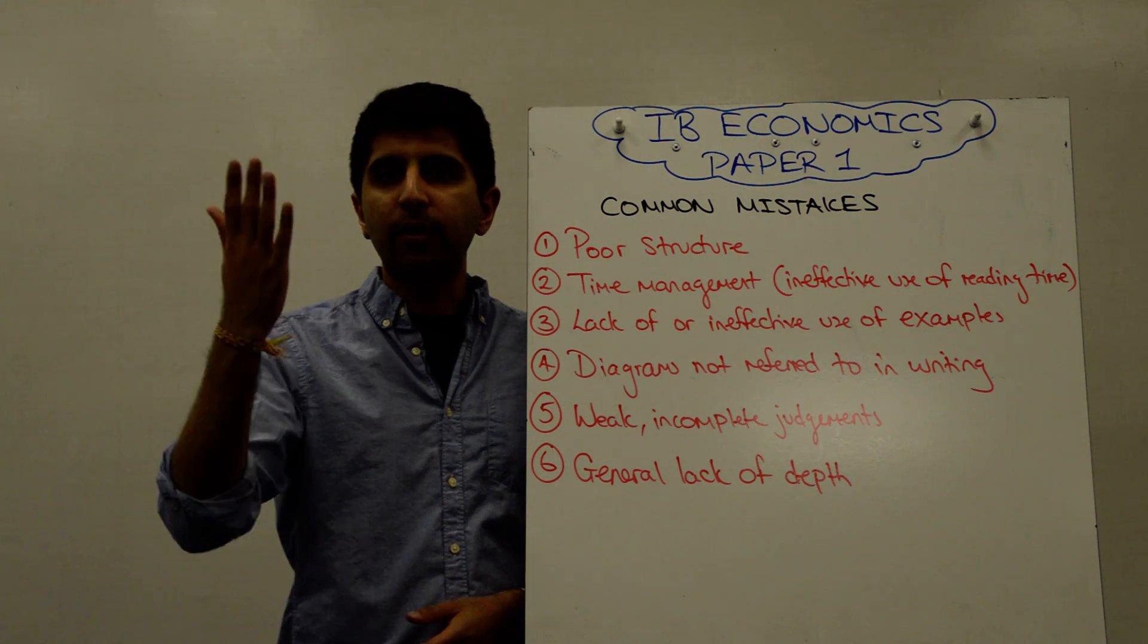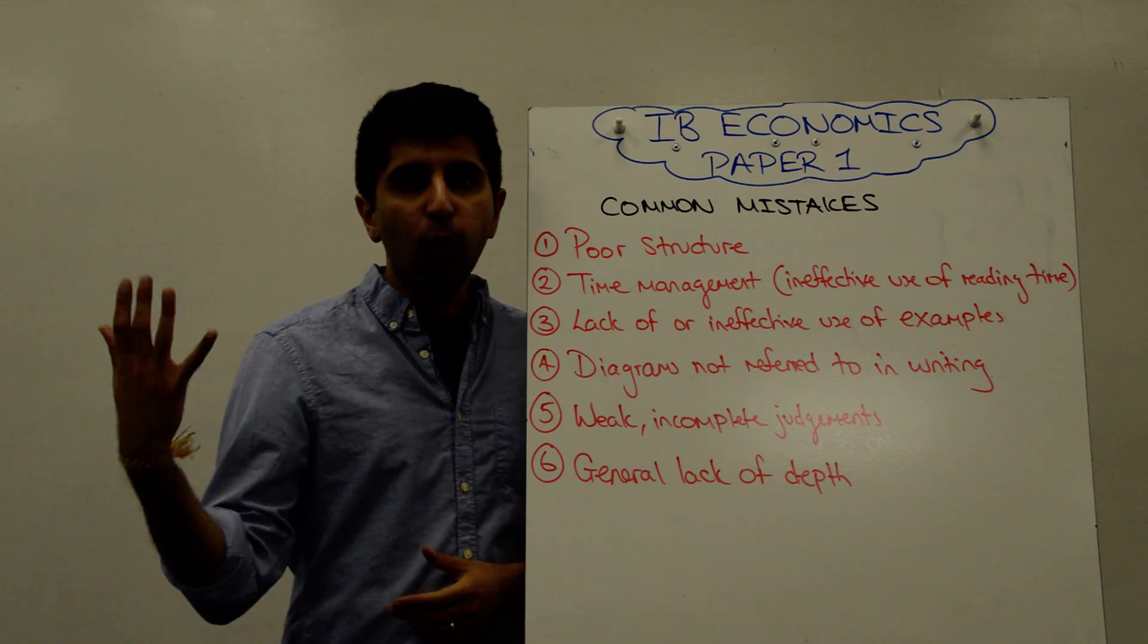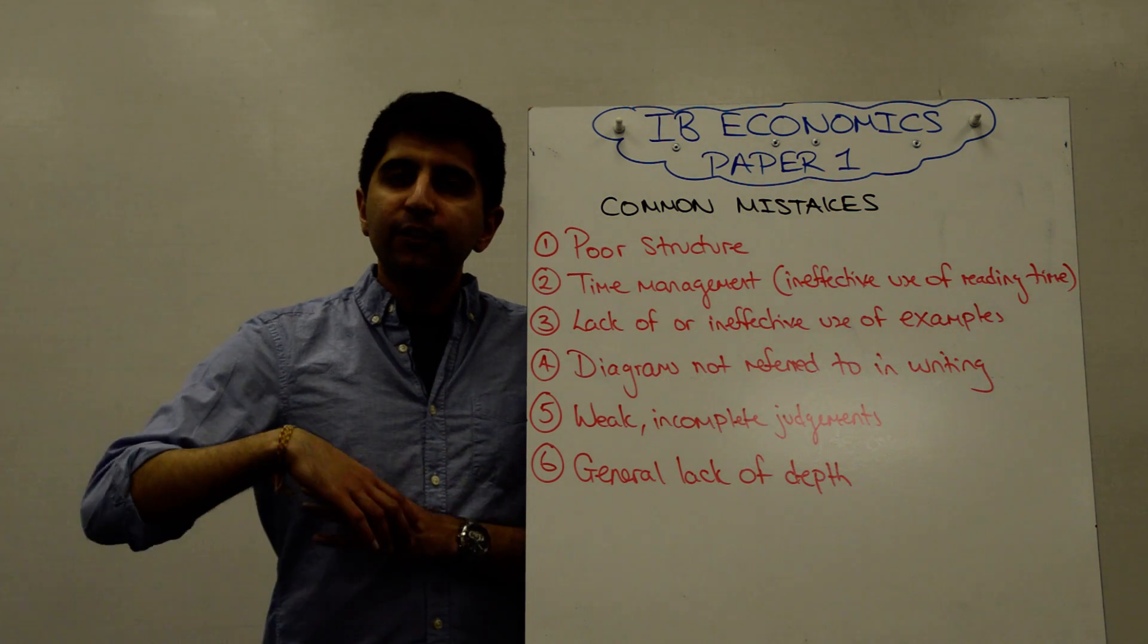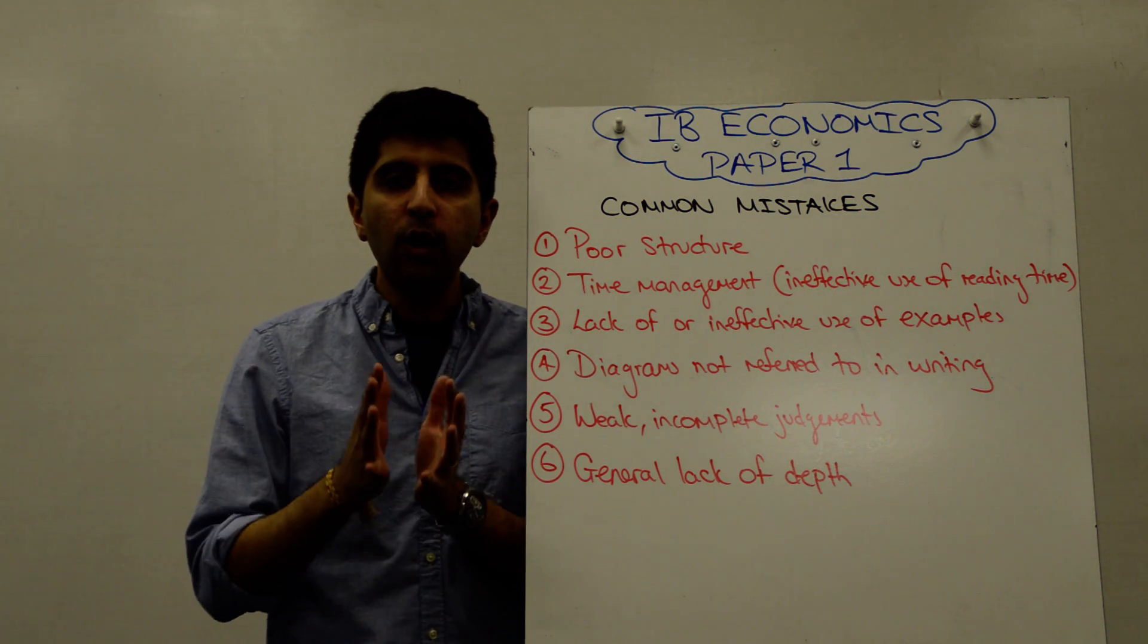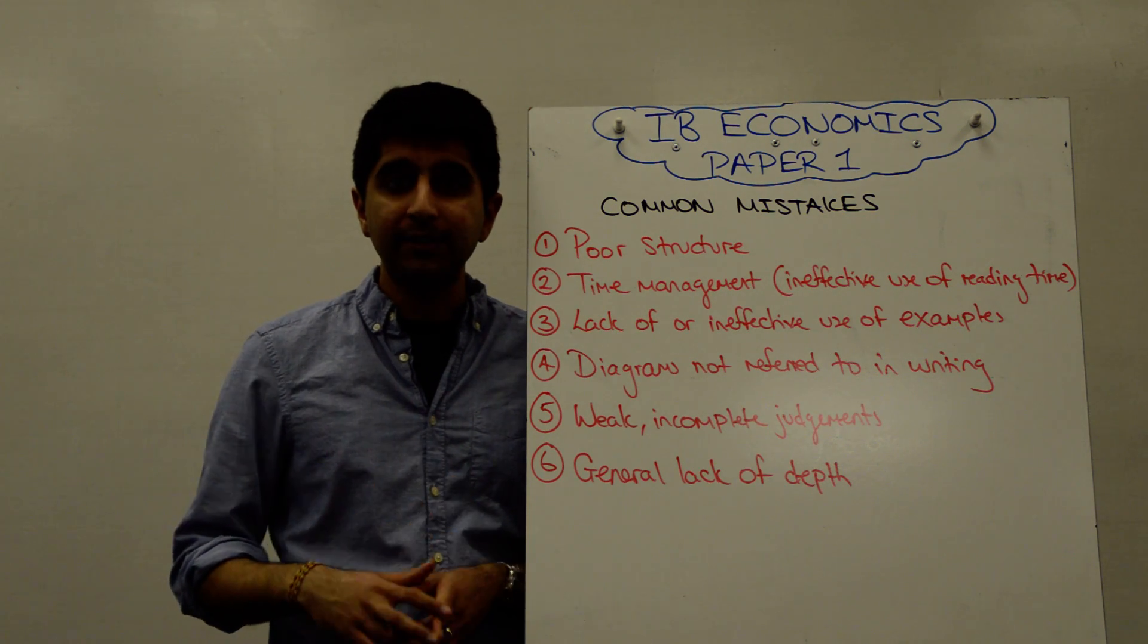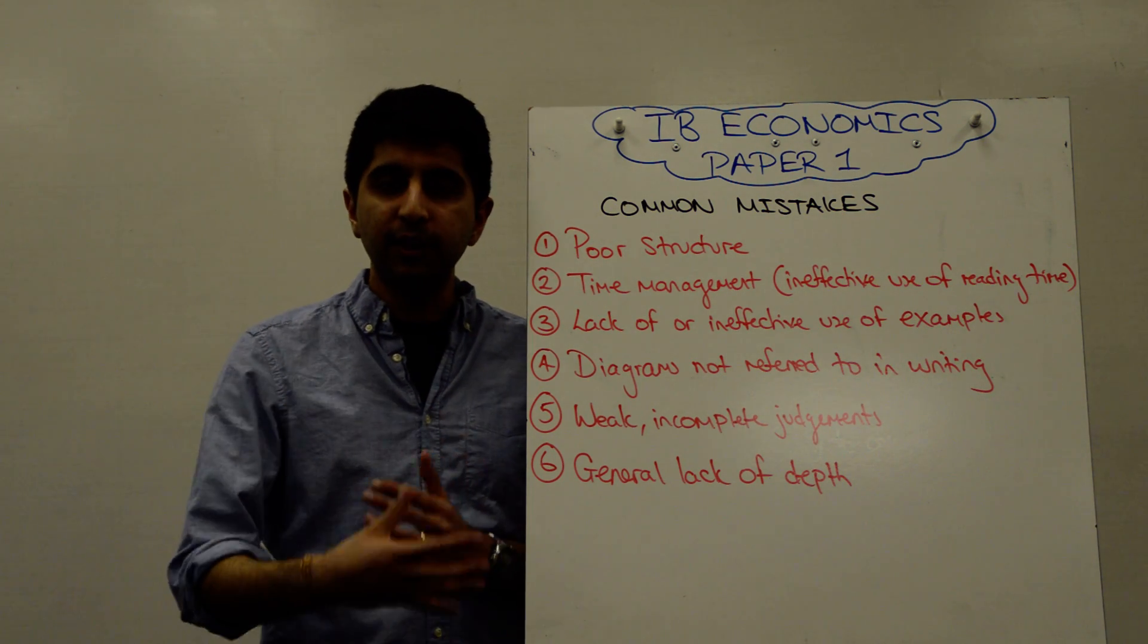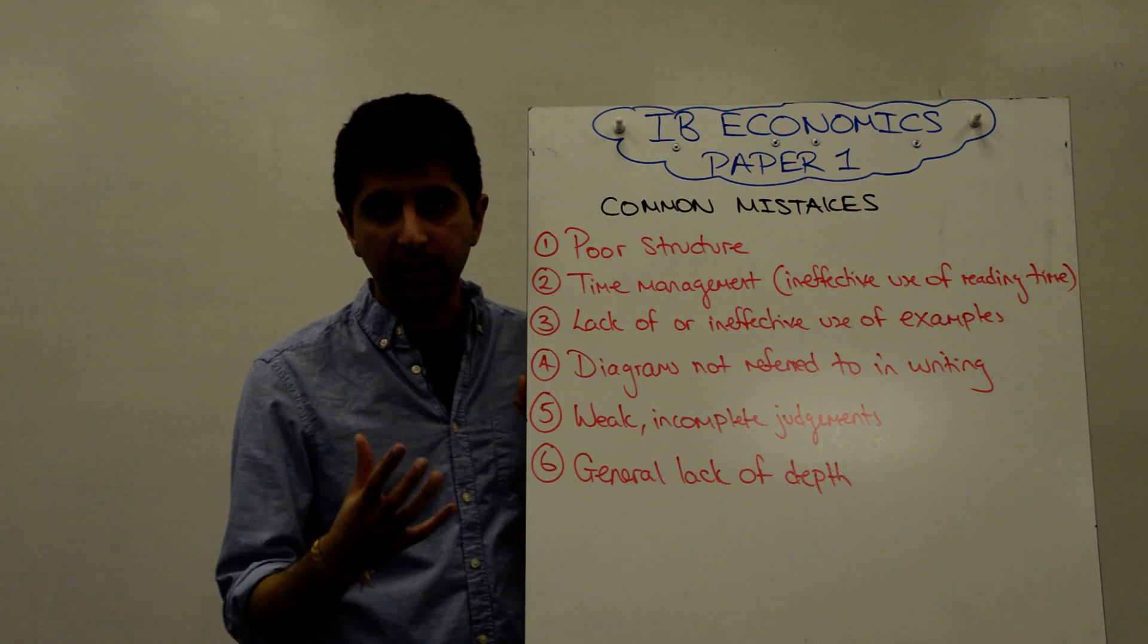Students assume examiners know everything about the diagram—why you've shifted curves, why price or quantity has changed, or why real GDP has changed. So many assumptions are made. Your mindset should be to assume the examiner knows nothing about economics. That will force you to explain everything you've drawn in writing. It's so important to refer to your diagrams.